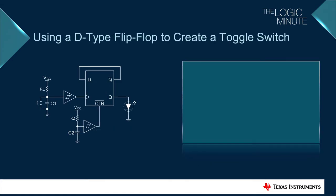To perform the toggling function a D-type flip-flop can be used. The power on reset circuit highlighted here initializes the D-type flip-flop to guarantee a low output at startup. When the switch is pressed the input is forced low, and when it's released it returns to high after a short delay determined by the values of R1 and C1 in the debounce circuit.